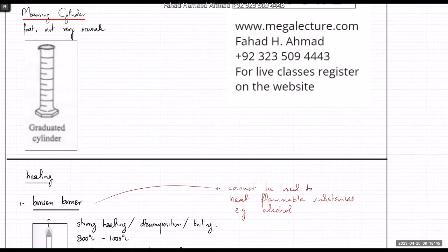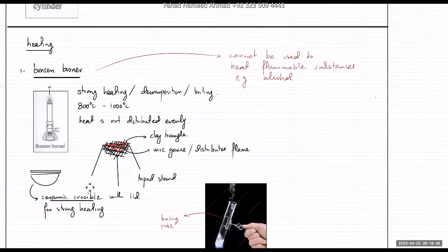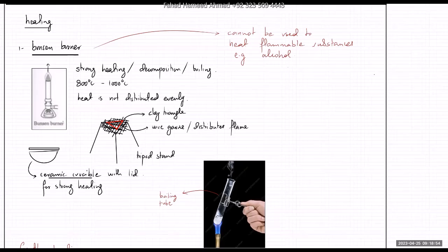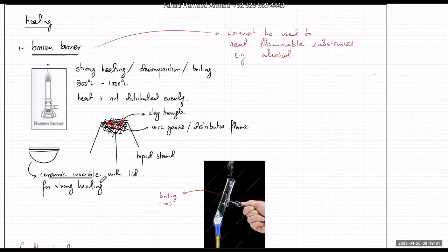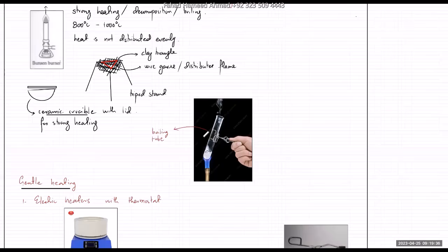Moving to heating apparatus — the Bunsen burner is the obvious source of heat, providing strong heating at 800 to 1000 degrees Celsius. It's used for decomposition, boiling, or removing water of crystallization. The heat is not distributed evenly, so use a clay triangle and wire gauze on a tripod stand. For strong heating, a ceramic crucible with a lid is used.